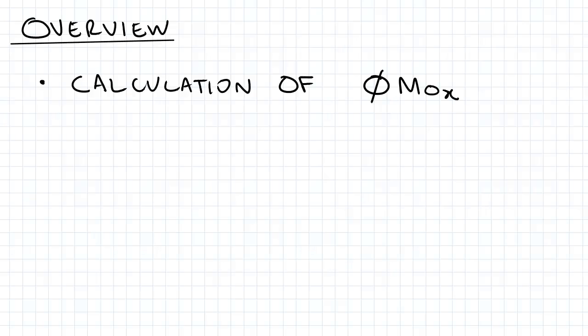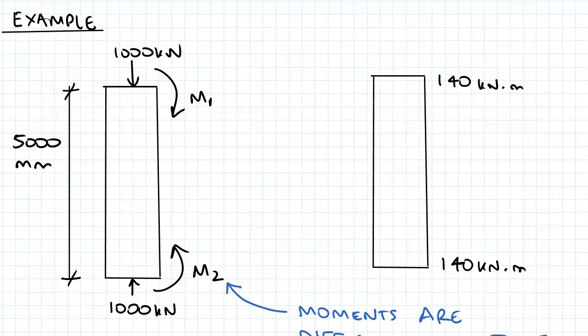Hi guys, in today's video we'll be doing a calculation of Phi MOX. So what I've got is an example where I've got a point load of 1,000 kilonewtons and some sort of arbitrary moment applied M1 and M2 over a length of 5,000 millimeters.